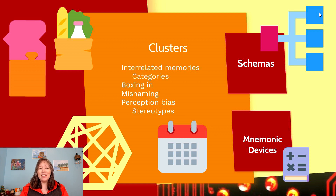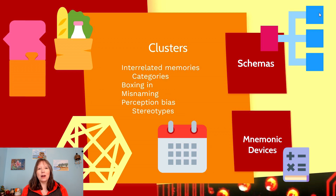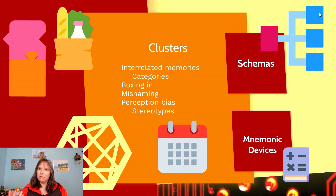Maybe produce will fit in, and maybe condiments or pasta goods will fit in, and you'll find these different categories. Similarly, if you are going to recall a list of the animals at the zoo, are you going to try to recall them in the order you saw them, or maybe in terms of what continent they're from?